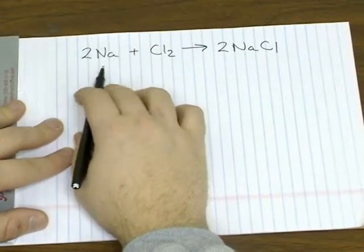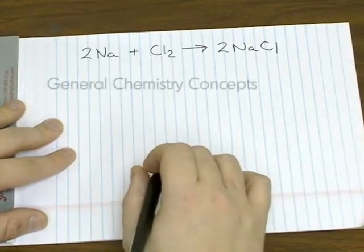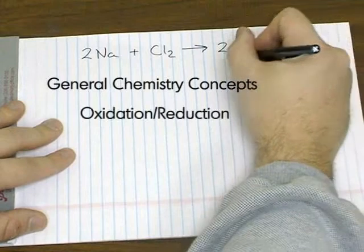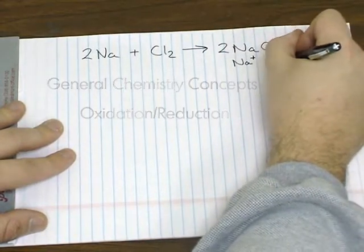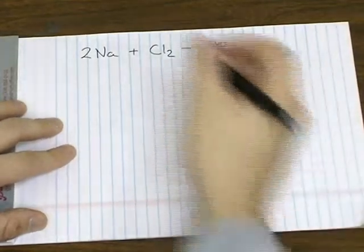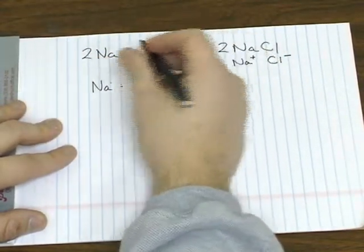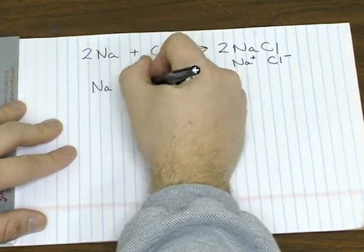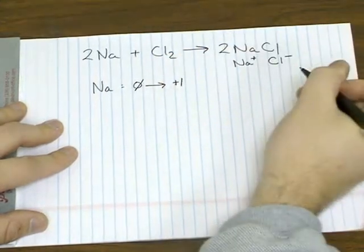Let's take a look at the reaction between sodium and chlorine to give you sodium chloride. Noting that sodium chloride is an ionic compound made up of sodium ion and chloride ion. So sodium is going from a neutral element made up of neutral atoms, going from having no charge to a plus one charge.